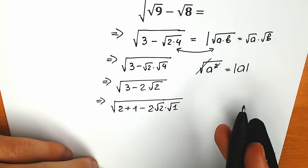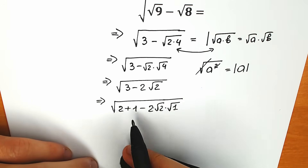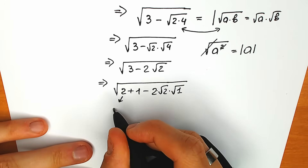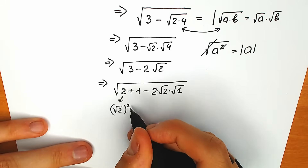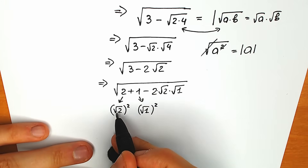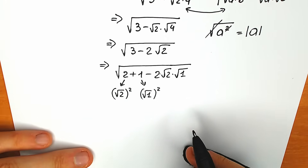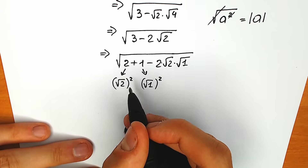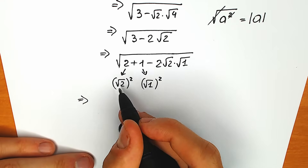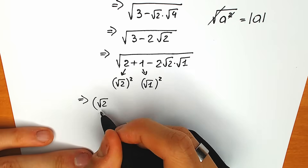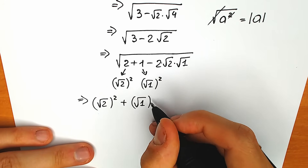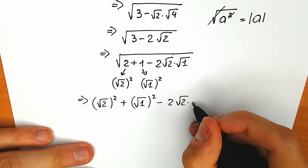Now, one really important step: instead of 2, we write square root of 2 to the second power, and instead of 1, we write square root of 1 to the second power — these are the same values, just written in terms of square roots. So we have: square root of 2 to the second power, plus square root of 1 to the second power, minus 2 times square root of 2 times square root of 1.